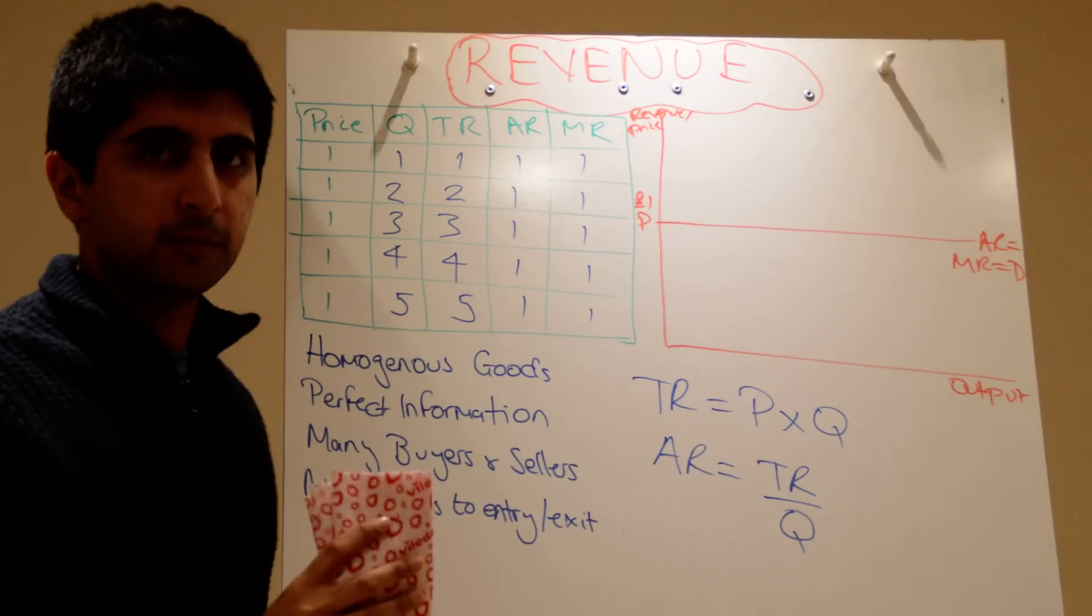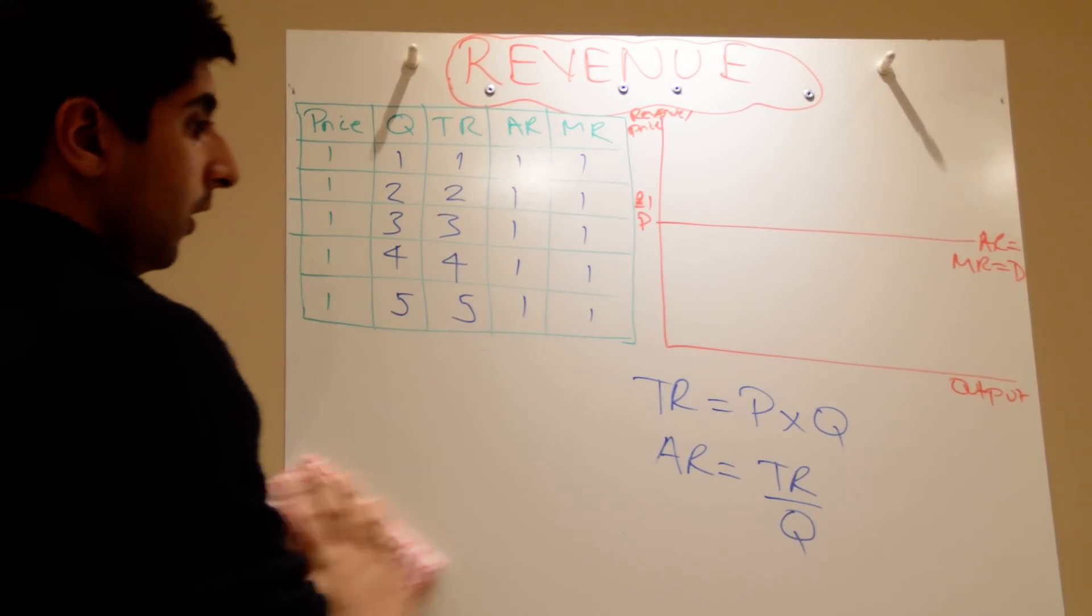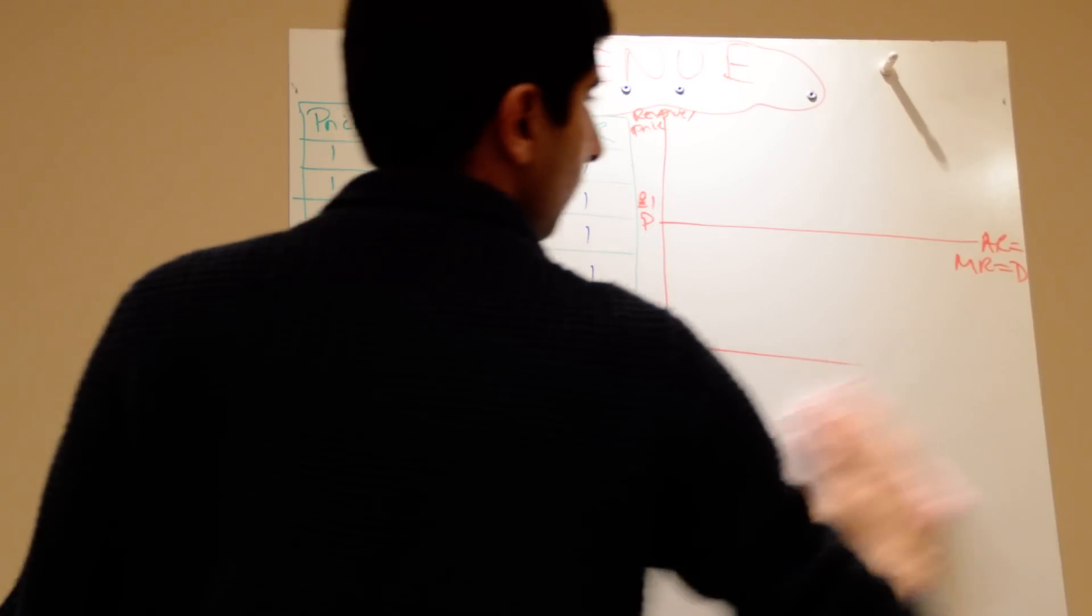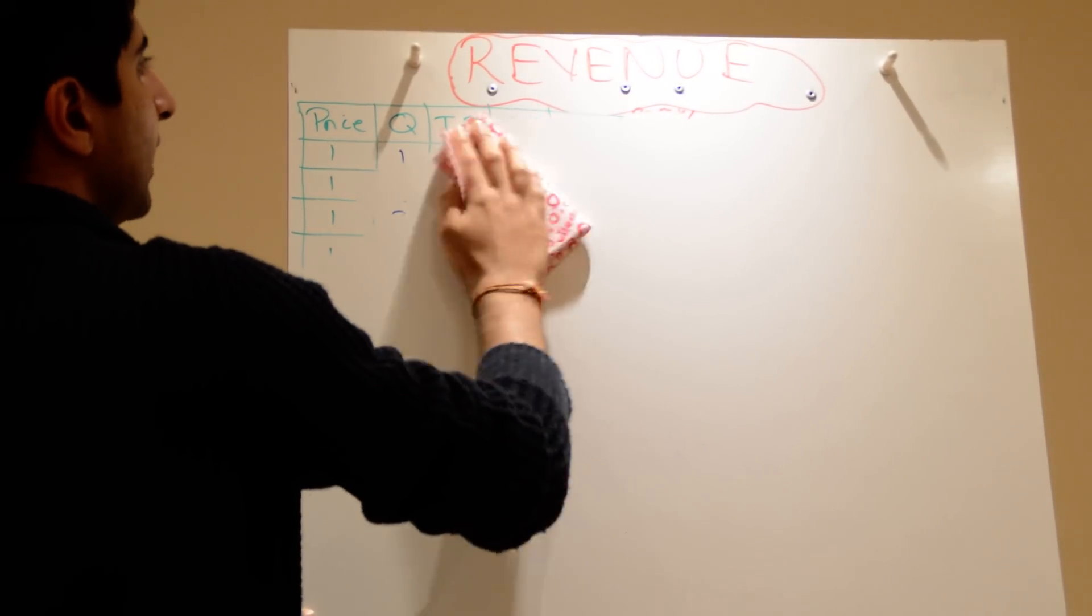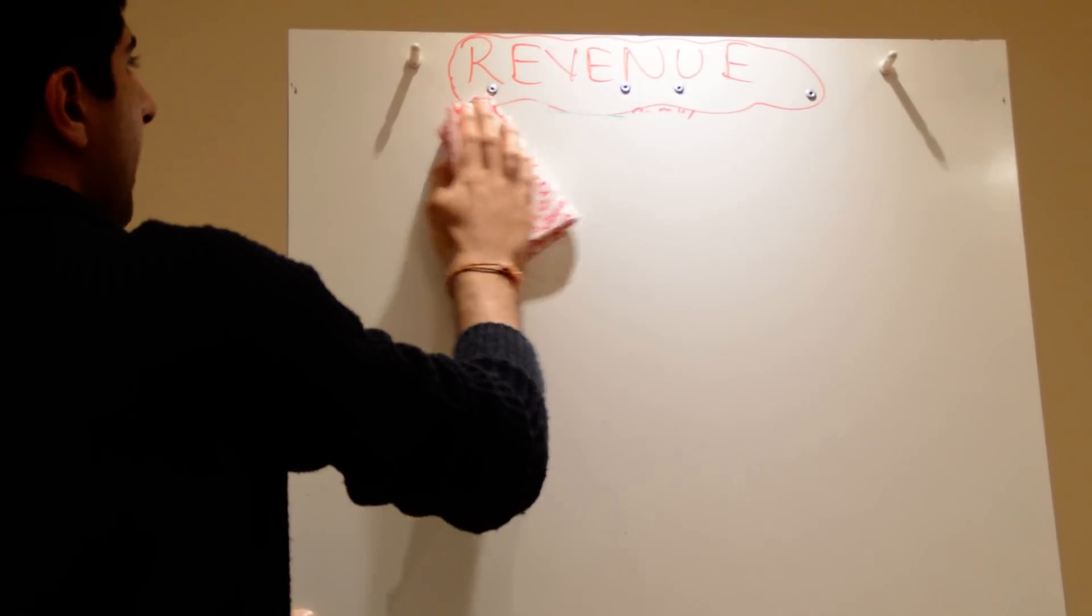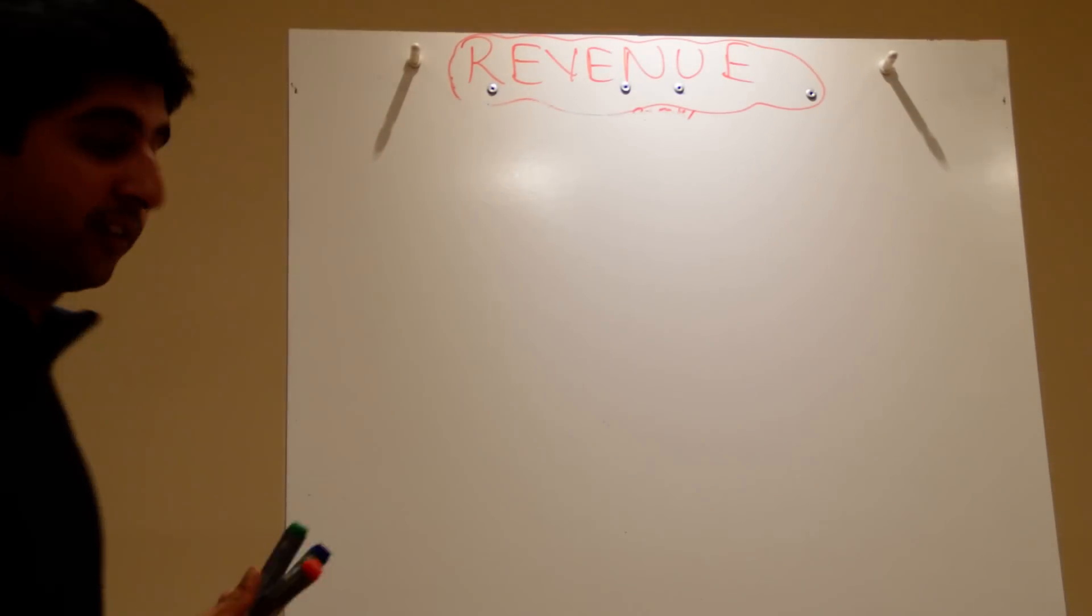Let's now drop these assumptions and look at imperfect competition. How do these change in that kind of market structure? So in imperfectly competitive markets, the assumptions we made, the conditions that were about perfectly competitive firms are dropped.